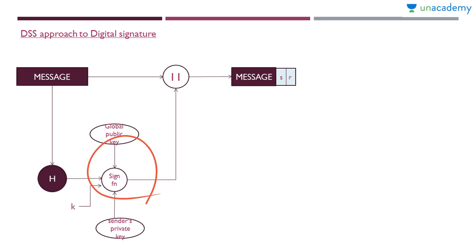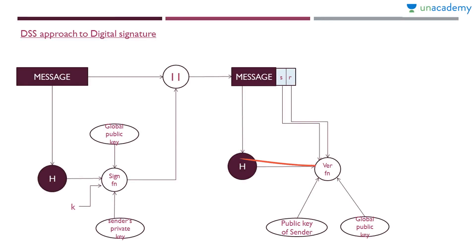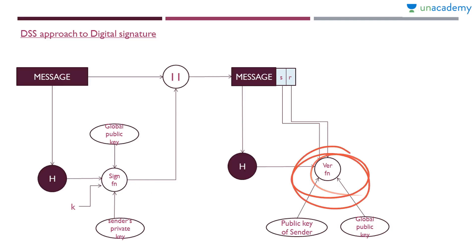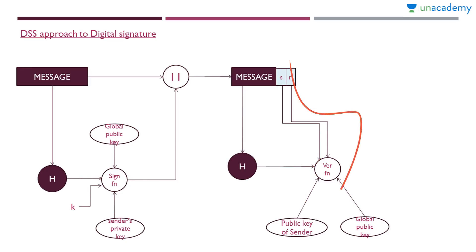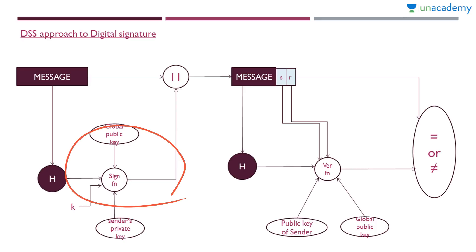This digital signature (r, s) is attached to the message and sent to the receiver. At the receiver side, the message is applied to the hash function. The output along with s, r, the sender's public key, and the global public key are applied to the verification function. The output of the verification function is then compared with r. If they match, the signature is verified. That is the DSS approach to digital signature.